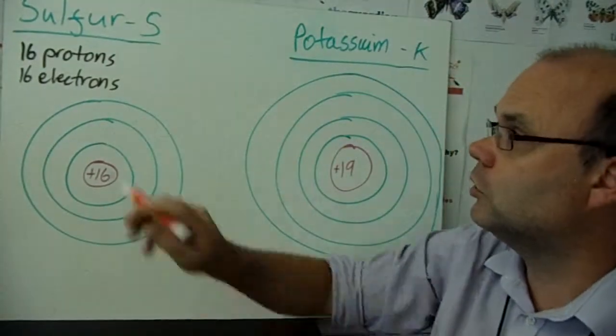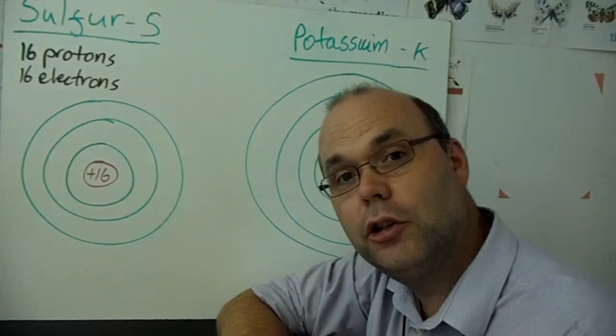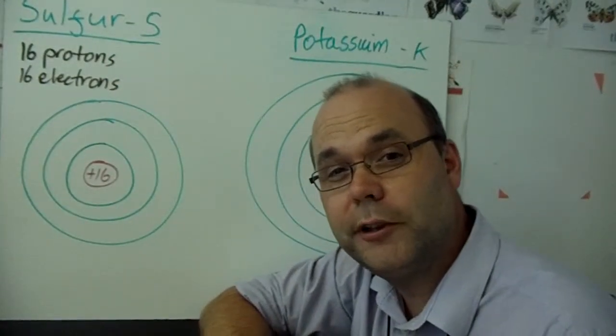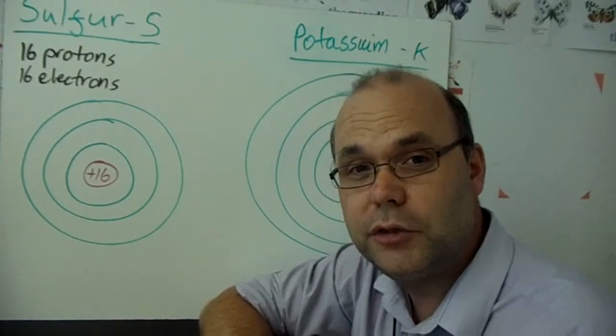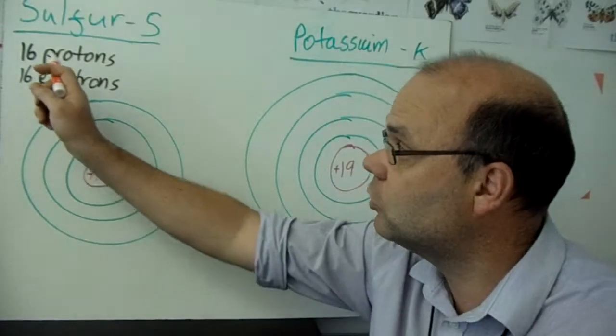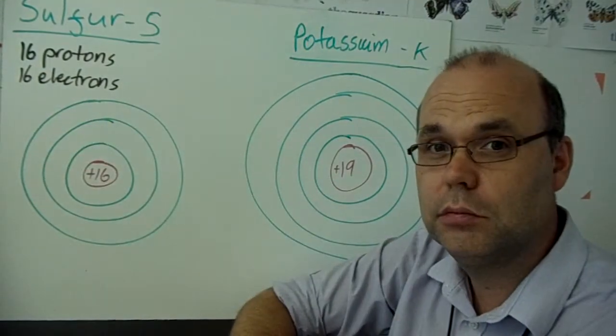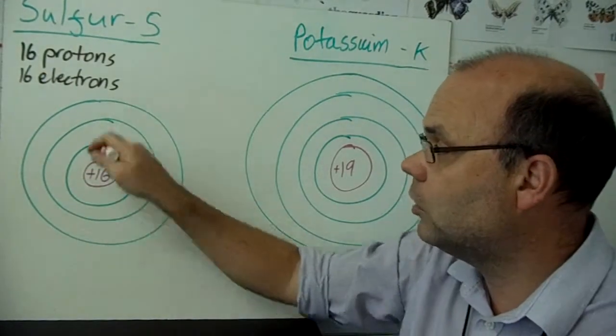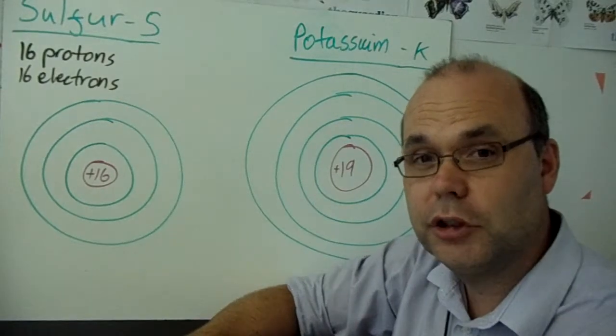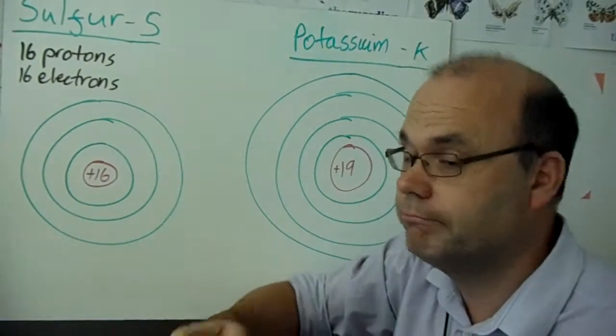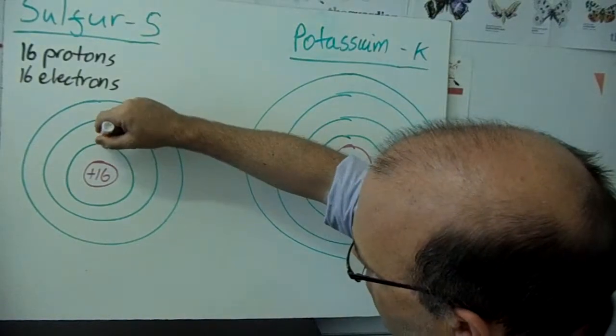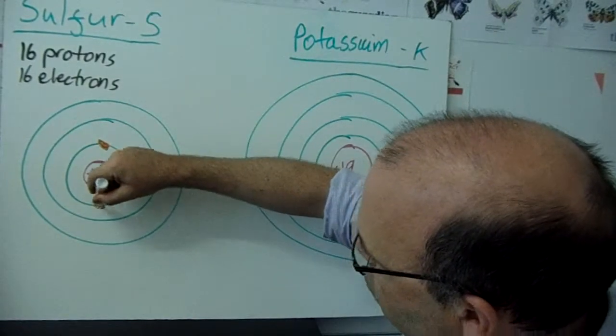So let's do a couple of practice ones. Here's sulfur. If you look on the periodic table, you'll see that sulfur has an atomic number of 16. That means it's got 16 protons and 16 electrons. We can start putting them in its energy levels. Now, they all want to go in the first one, but only fits two. One, two. Then it's full.